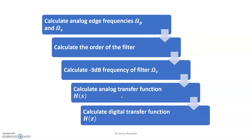We know the steps to design the Butterworth filter. The first step is to calculate the analog frequencies ΩP and ΩS — the passband and stopband frequencies. We need to calculate these because the given specifications are for a digital filter, and the Butterworth filter method is an analog filter design method. That's why we need to convert the digital specification into the analog specification.